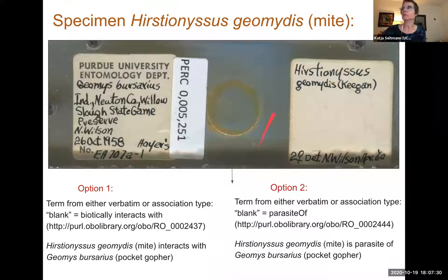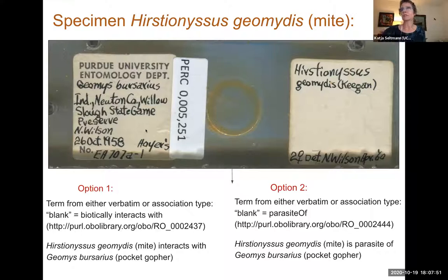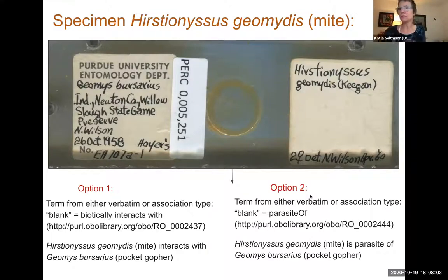Let me show a real example. This is a slide from the Purdue University Entomology Department — a slide of an ectoparasitic mite of a pocket gopher. The specimen is somewhere in the center of the slide, and there is no explicit interaction stating that this specimen is a parasite of a pocket gopher. There are several options for how this data could be entered into an institutional database. Option one would be that a blank field is translated into just 'biologically interacts with.'